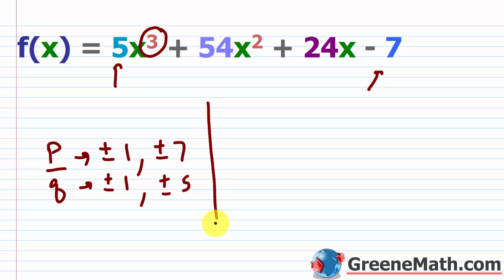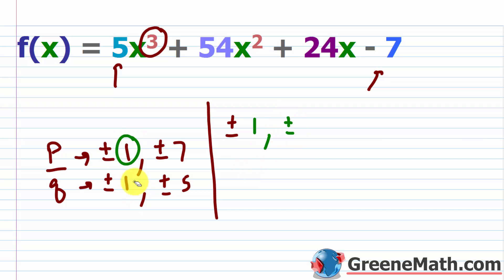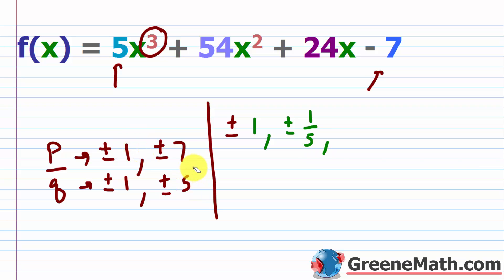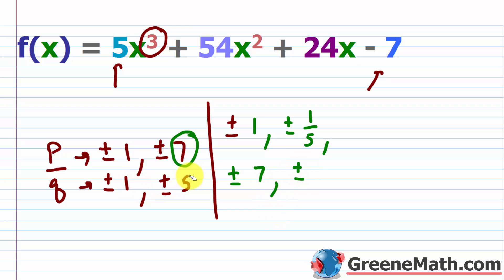Listing all combinations: ±1/1 = ±1, ±1/5, ±7/1 = ±7, ±7/5. That gives us 8 possible rational zeros. I'm not going to test all of these — it's too much work. But for reference, 1/5 is the only rational zero for this polynomial.